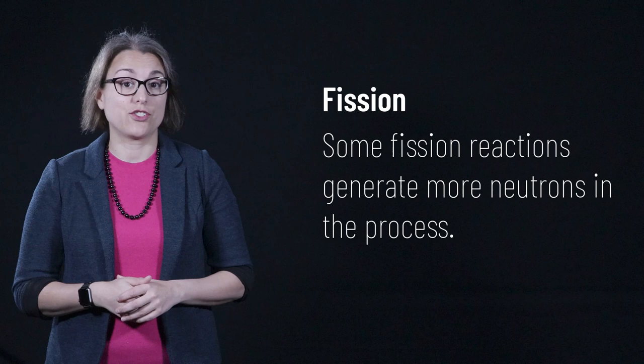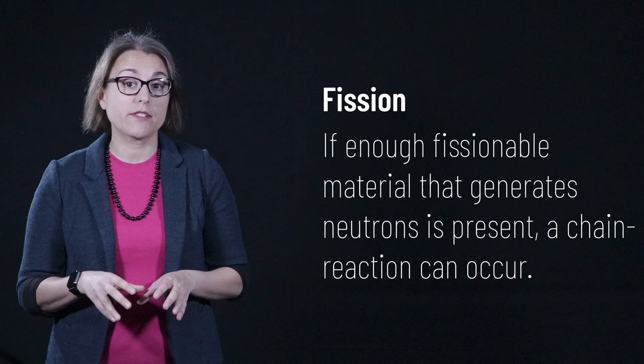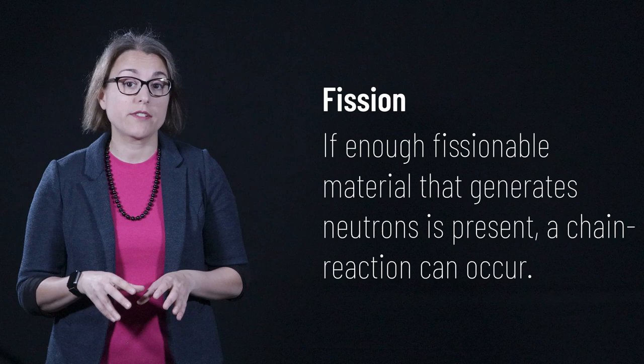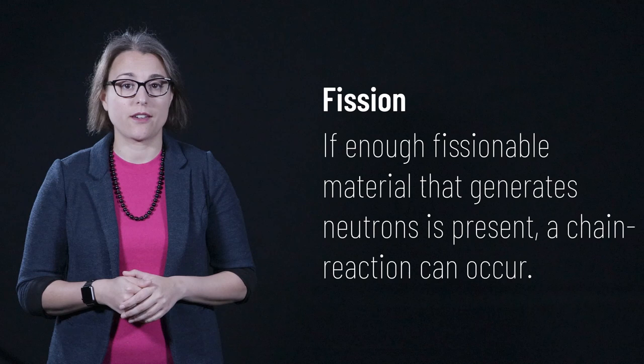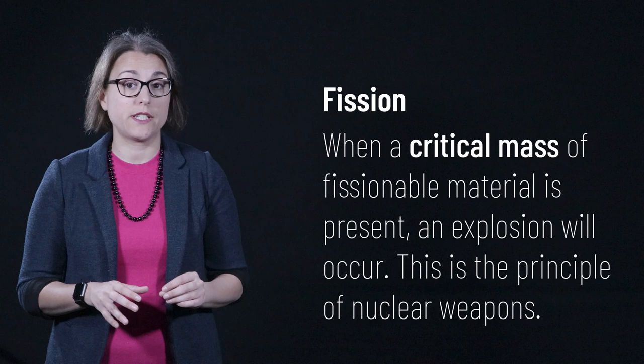Some fission reactions generate even more neutrons. If enough fissionable material is present, the generation of new neutrons after each fission event will kick off something known as a chain reaction, a self-sustaining reaction that doesn't require any intervention to keep it going. When a large enough quantity known as a critical mass of fissionable material is present, an explosion can result, releasing a massive amount of energy. This is the principle behind nuclear weapons.